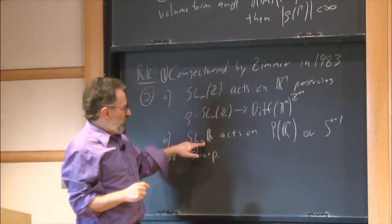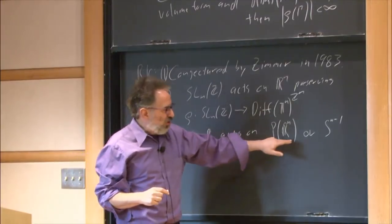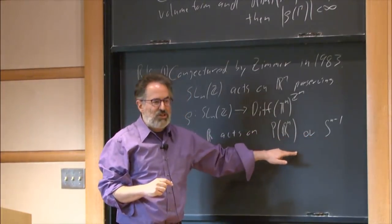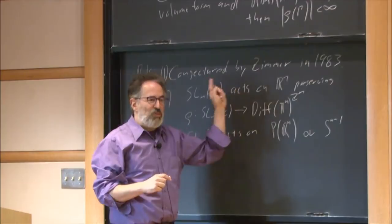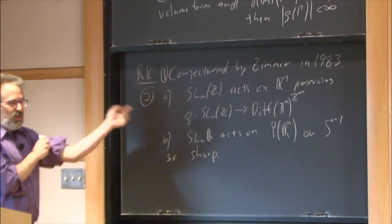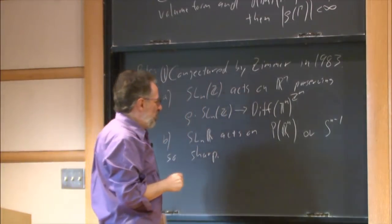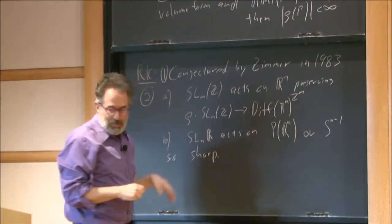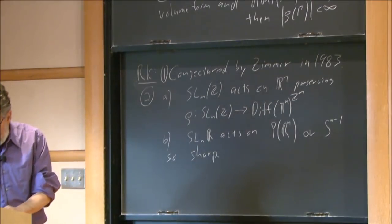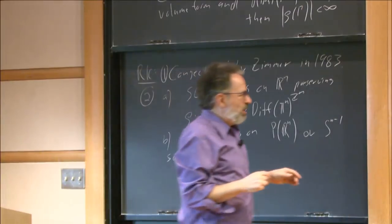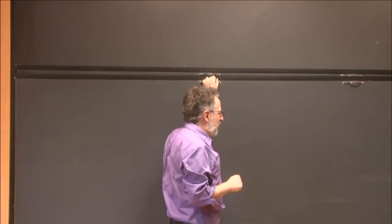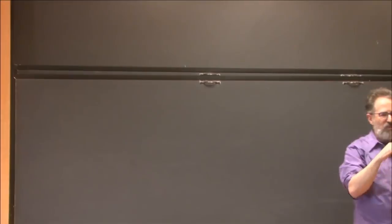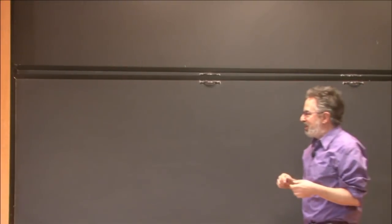You might wonder: if I look at SL(N,Z) sitting inside SL(N,R) and look at the actions on projective space, you have to convince yourself that those aren't volume-preserving—otherwise the theorem would be wrong. But it's relatively easy to do. So the statement has been a conjecture for some time, it's sharp, and now I want to slowly put it in more context to give you better motivation.